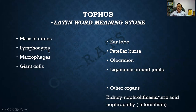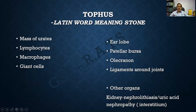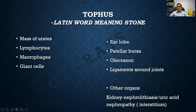Inflammatory cells — lymphocytes, macrophages, and giant cells — are seen. Apart from the skeletal system, other organs can be affected, namely the kidney. In the kidney, two things can happen: nephrolithiasis, meaning formation of stones due to uric acid, and affection of the interstitium — the supporting tissue — which is called uric acid nephropathy. Incidentally, the Latin word tophus means stone, so it is a stone-like lesion seen in gout.